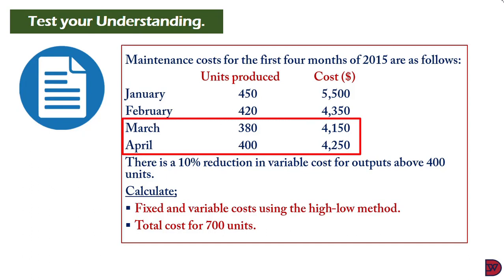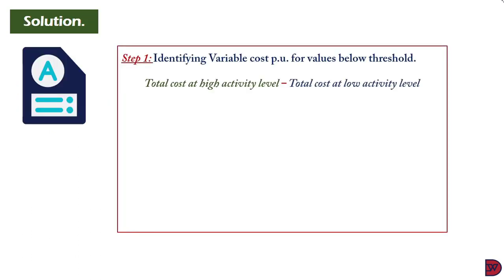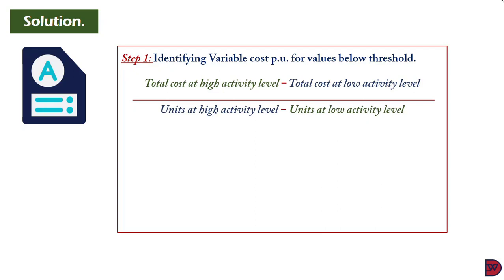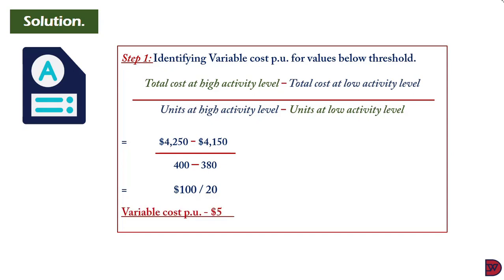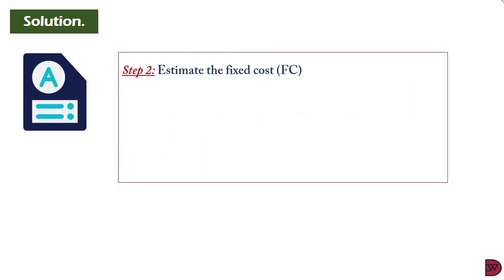Since anything above 400 units leads to a 10% drop in variable cost, we pick activity levels at or below 400 units. Variable cost per unit = (total cost at highest − total cost at lowest) ÷ (highest units − lowest units) = ($4,250 − $4,150) ÷ (400 − 380) = $100 ÷ 20 = $5 per unit.